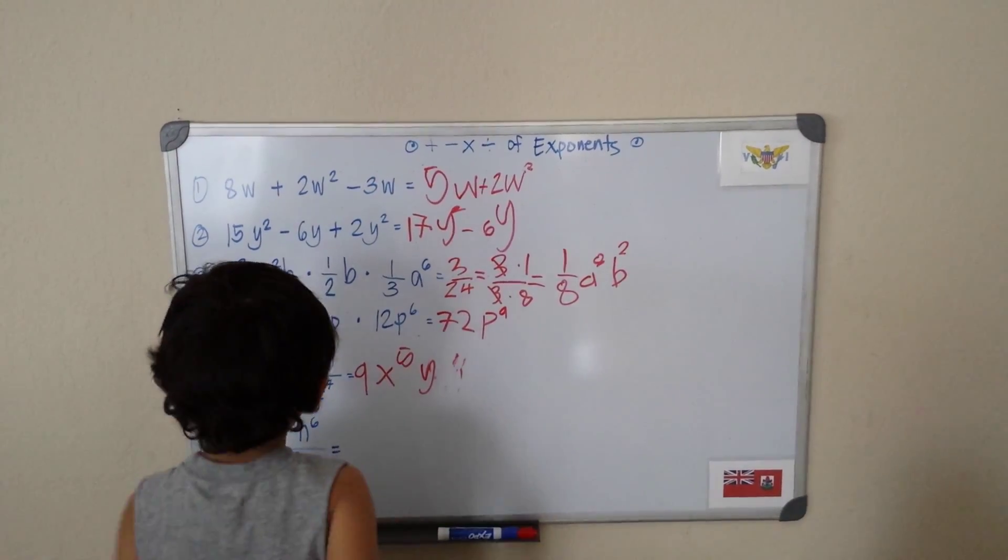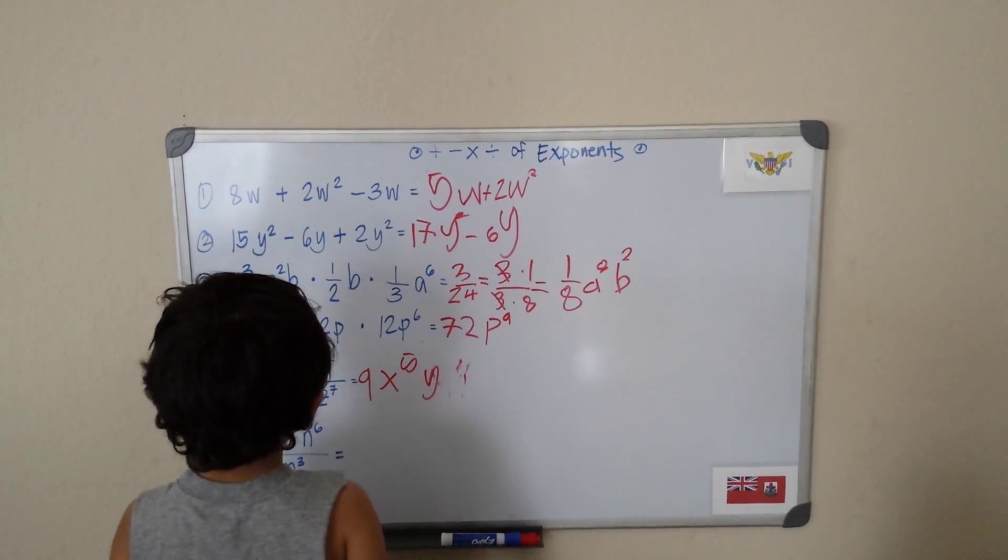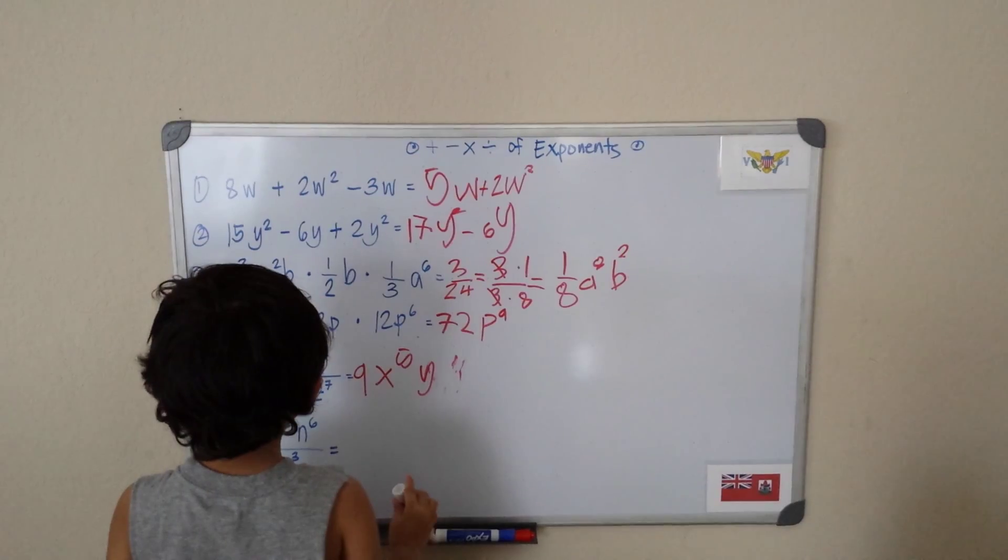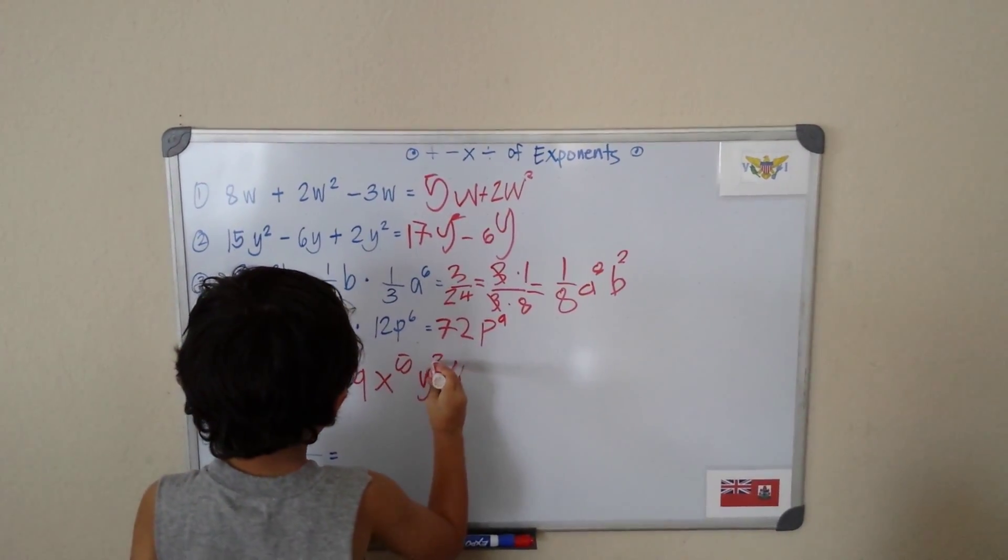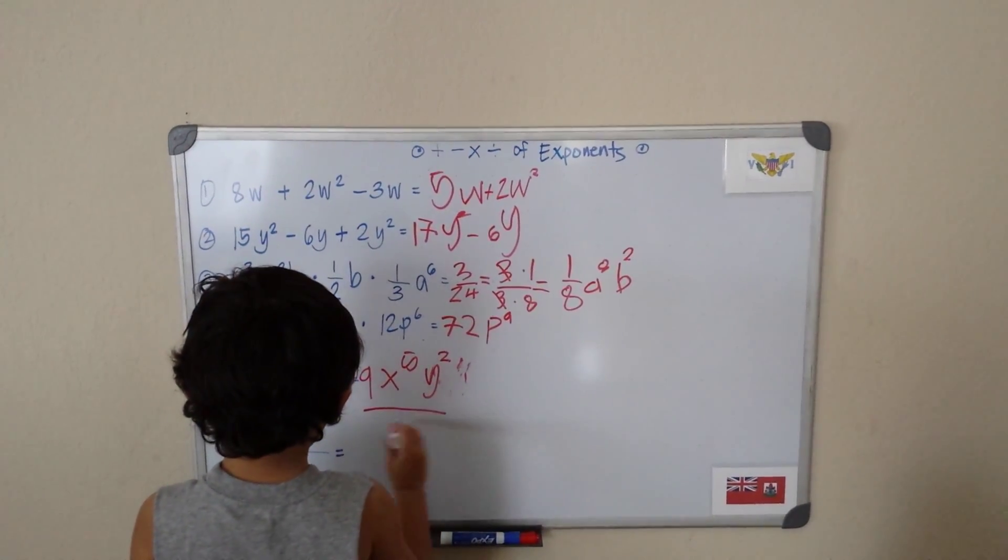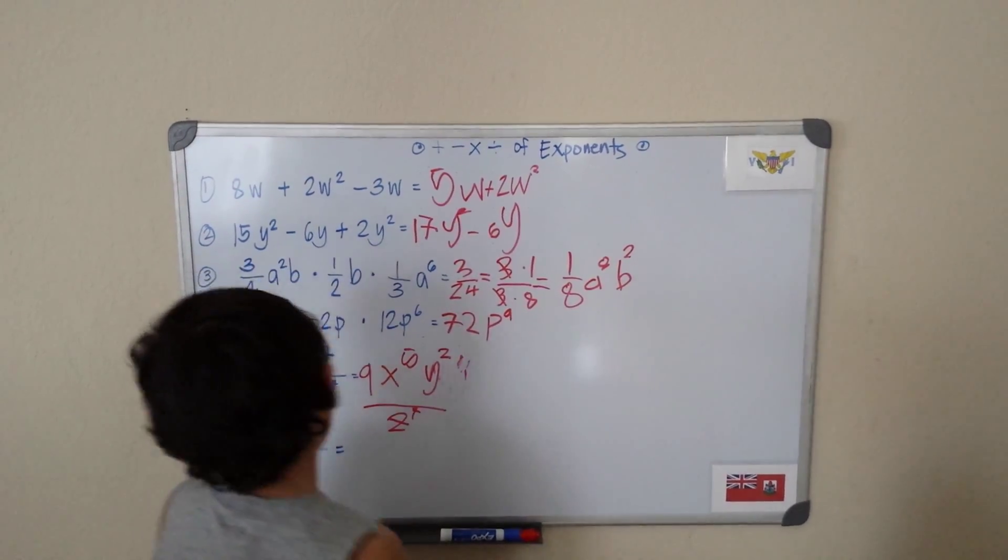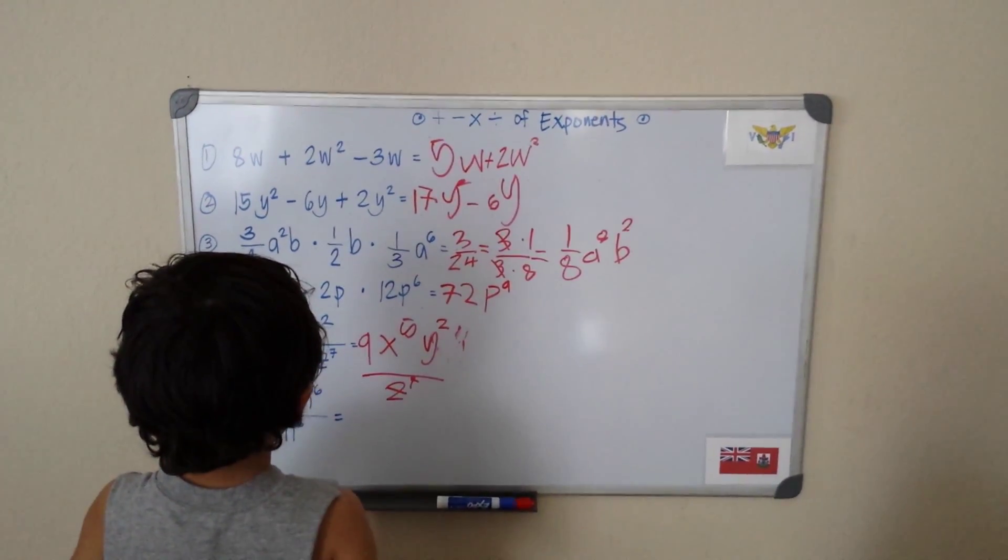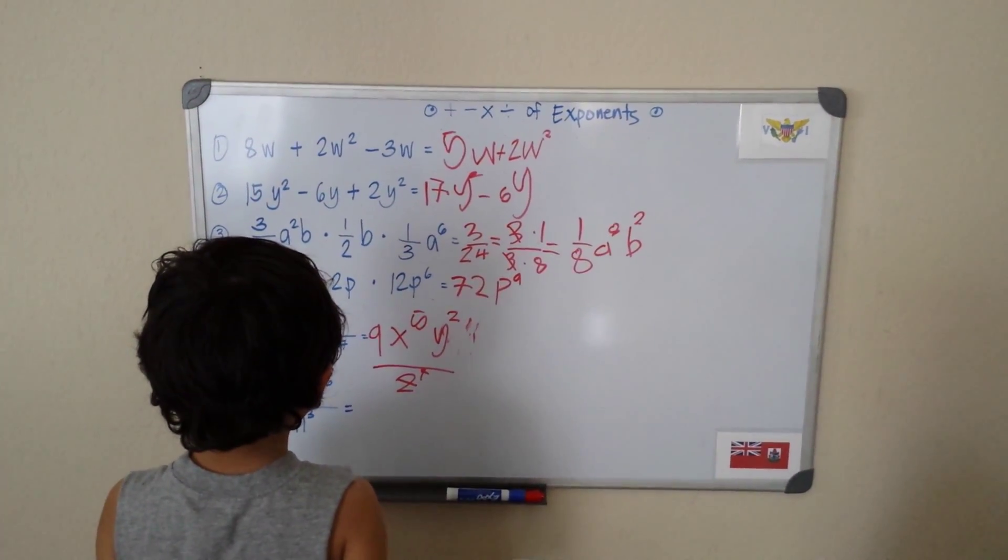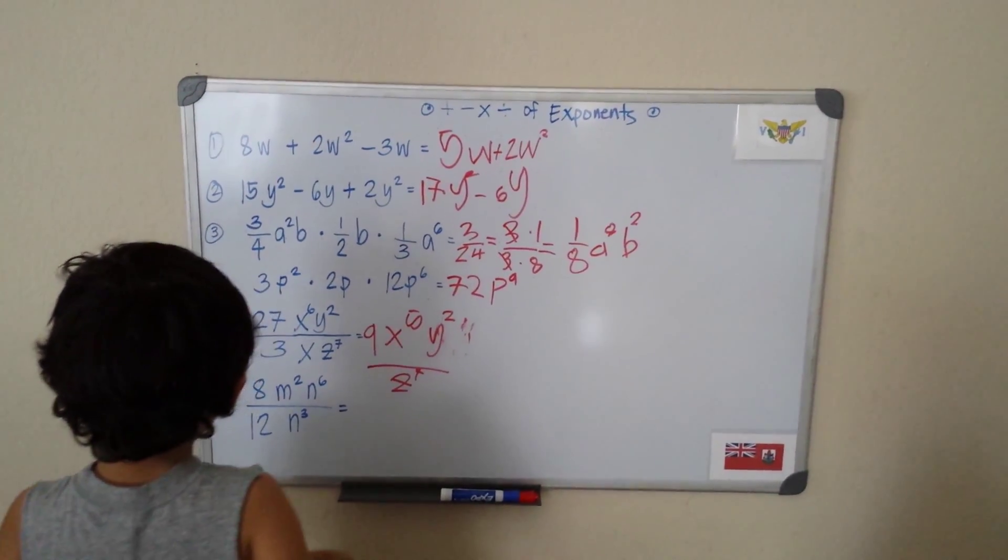I did not say X. So 2 minus 7. Wait. Let's just write it from the top: Y squared. And we write down our Z here. So that's my final answer: 9X to the 5th, Y squared, Z to the 7th, over Z to the 7th.